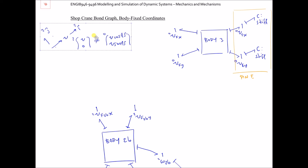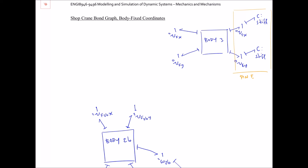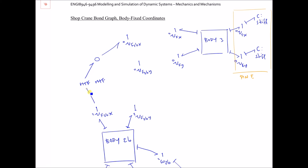The easiest coordinate transformation is to transform the velocity of F on body 2b from body-fixed into inertial coordinates. So I want to produce v_F_on_2b in the inertial x-direction and v_F_on_2b in the inertial y-direction. I'll do that with modulated transformers — a rotation matrix involving four modulated transformers: cos(theta)*v_x, sin(theta)*v_y, and corresponding terms.